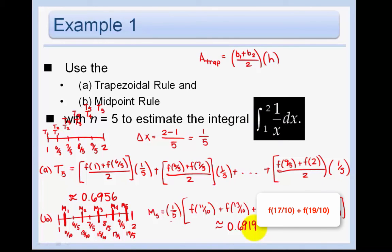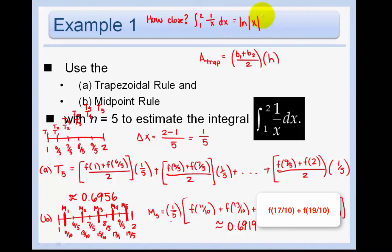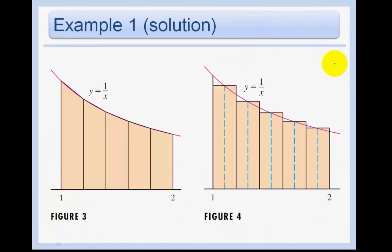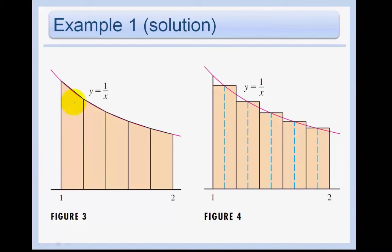We can check how close these approximations are because this integral can be computed exactly. The antiderivative of 1/x is ln|x|, evaluated from 1 to 2. That gives ln(2) minus ln(1), which equals approximately 0.6931. Both the trapezoidal rule (0.6956) and the midpoint rule (0.6919) are very close to the exact value. Looking at the picture on the next slide, even though the trapezoidal rule looks like it should do better, the midpoint rule actually performed quite well in this case. And that's it for this lesson.